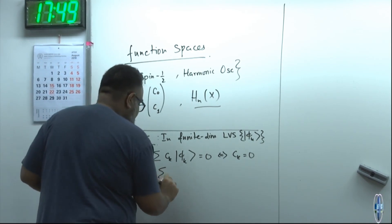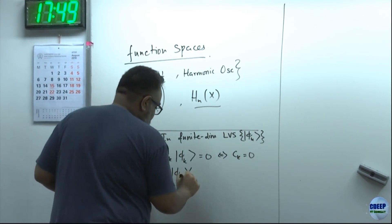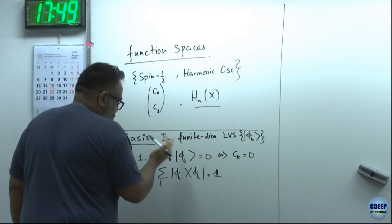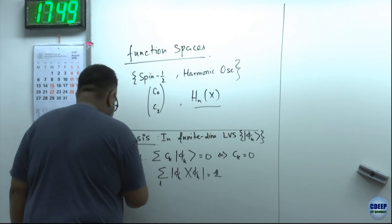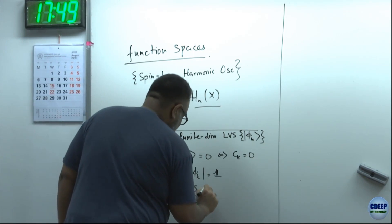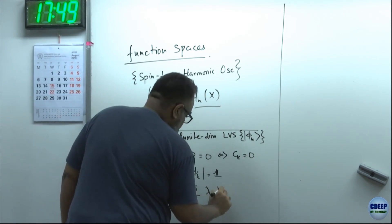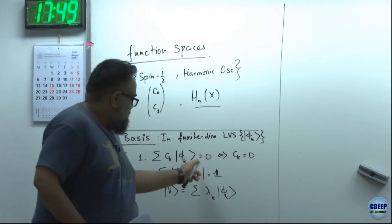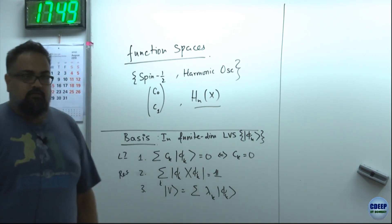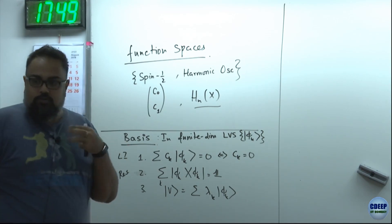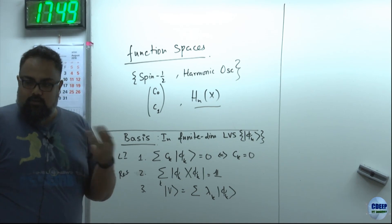We also want the resolution of the identity: sum over k of |phi_k><phi_k| equals the identity operator. Implied by both of these is that for any general vector v, it should be expressible as some lambda_k times phi_k. Any general vector v must be expandable - this follows from the resolution of identity.